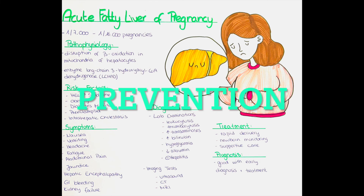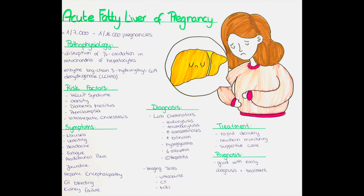Is there any prevention? There is no known way to prevent acute fatty liver in pregnancy. Women with risk factors such as a family history of acute fatty liver in pregnancy or a history of HELLP syndrome may be monitored more closely during pregnancy. To reduce the risk, a woman can maintain a healthy weight, eat a healthy diet, exercise regularly, limit alcohol intake before getting pregnant, and get regular prenatal care.